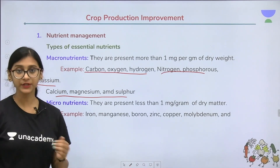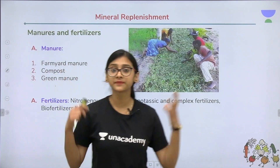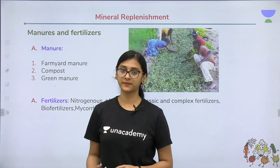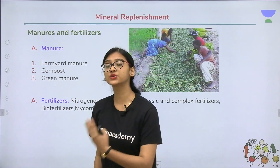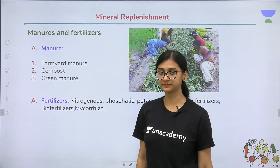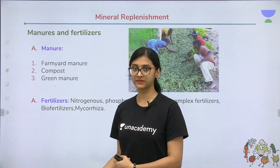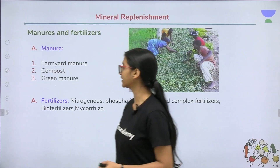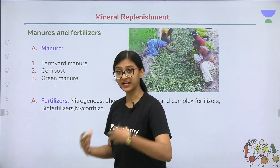These nutrients need to be introduced into plants in order to increase crop production. The different methods to introduce nutrients into crops are manures and fertilizers. Manures can be vegetable waste or excreta of different animals — these are natural fertilizers. Manures can be divided into farm yard manure, compost, and green manure.